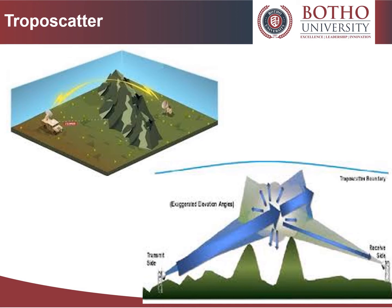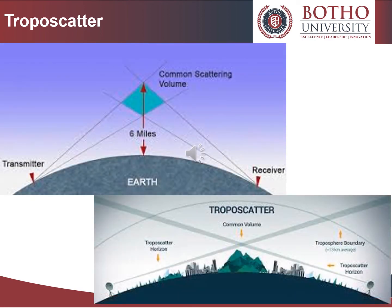As the beam passes through the troposphere, a small fraction of the microwave energy is scattered back toward the ground by water vapor and dust in the air. A sensitive receiver beyond the horizon picks up this reflected signal. Signal clarity depends on the weather and other factors, and a high level of technical difficulty is involved in creating a reliable over-horizon radio relay link. Troposcatter links are therefore only used in special circumstances where satellites and other long-distance communication channels cannot be relied upon, such as in military communications.